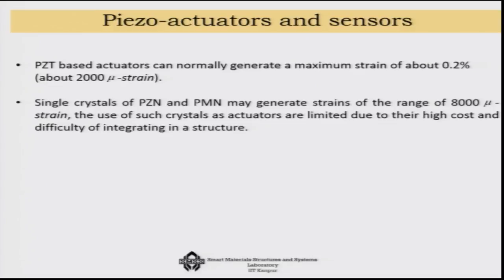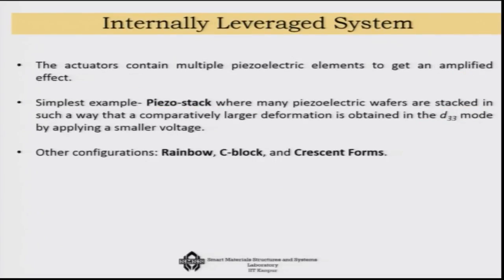The maximum strain λ that can be used is about 2000 microstrain. In some cases one can use PZN or PMN crystals to reach up to 8000 microstrain, but these are not commercially available and are very expensive. So generally λ_max is about 2000 microstrain, and MEMS system designs must be based on that. Since 2000 microstrain (2000 × 10⁻⁶) is very small, one might ask whether we can increase this.